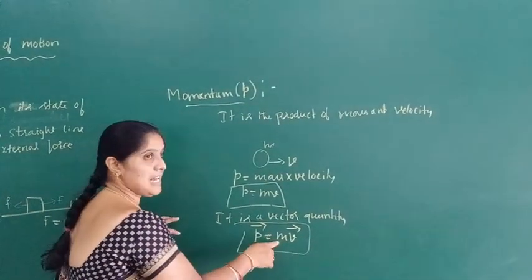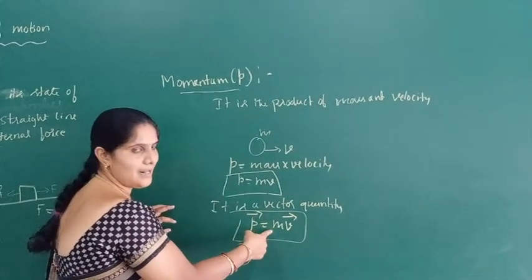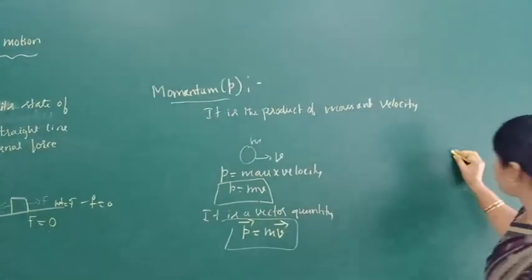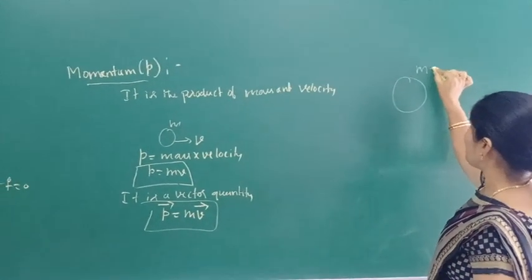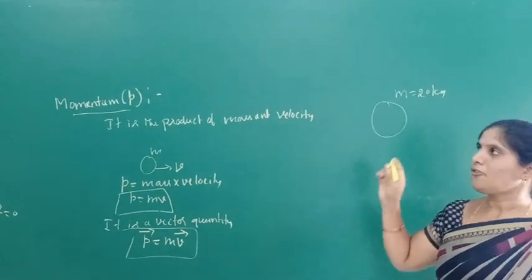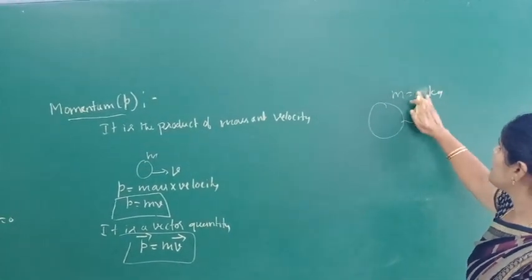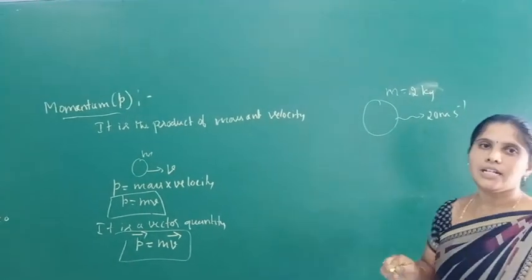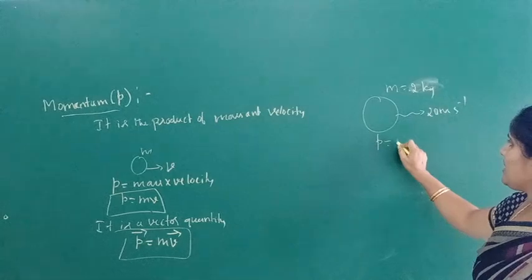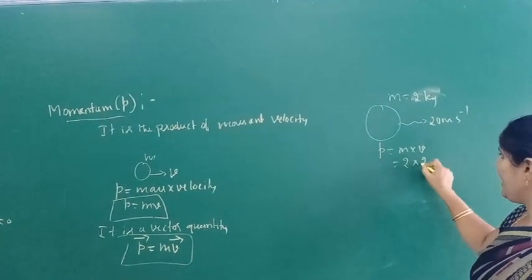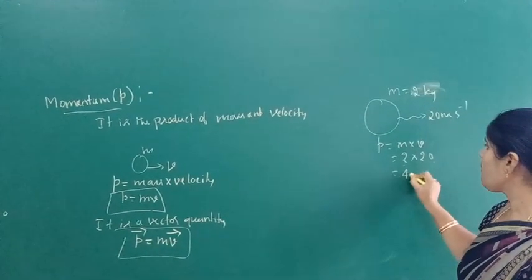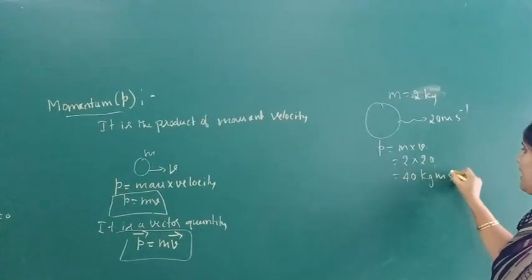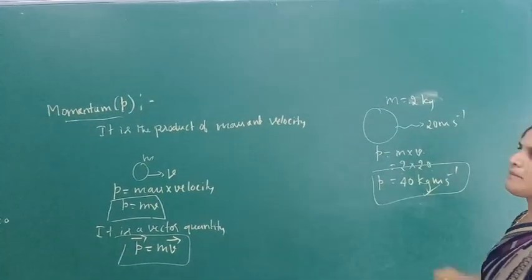Here, M is the mass — it is a scalar quantity — and V is the velocity, which is a vector quantity. For example, consider a body of mass 2 kg moving with a velocity of 20 meters per second. Then the momentum is P = M × V = 2 × 20 = 40. The SI unit of momentum is kilogram meter per second, so the momentum is 40 kg·m/s.